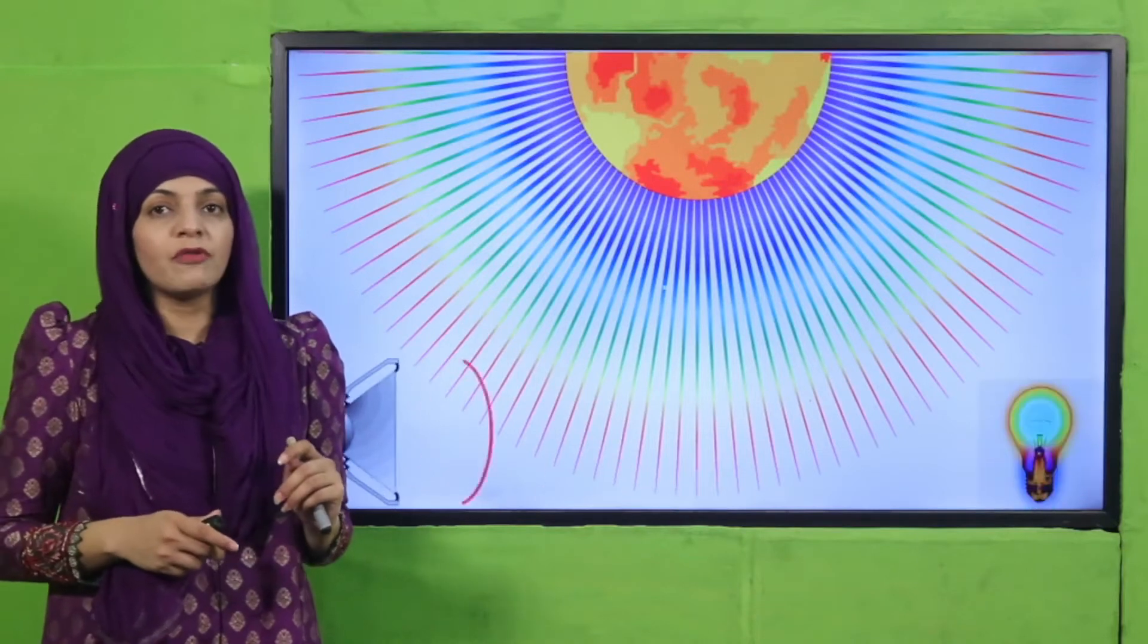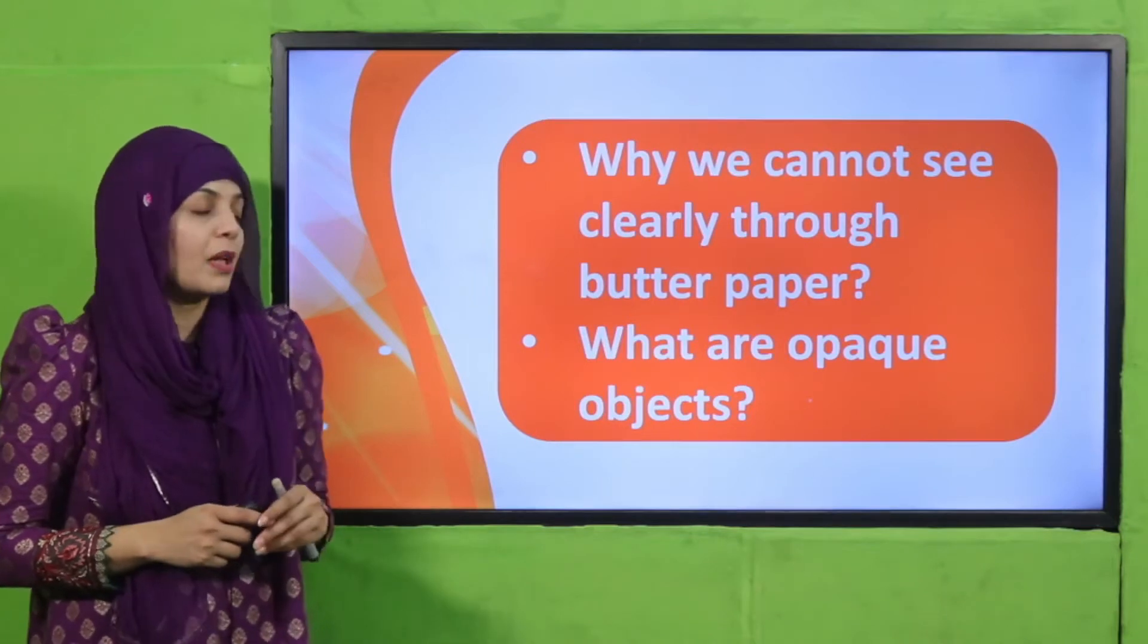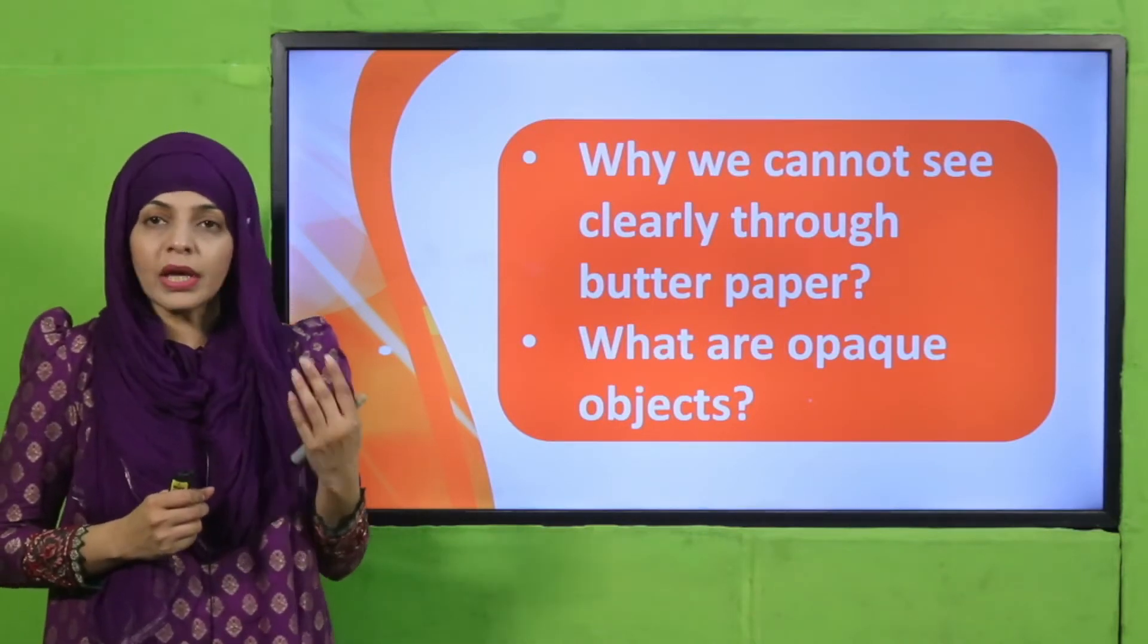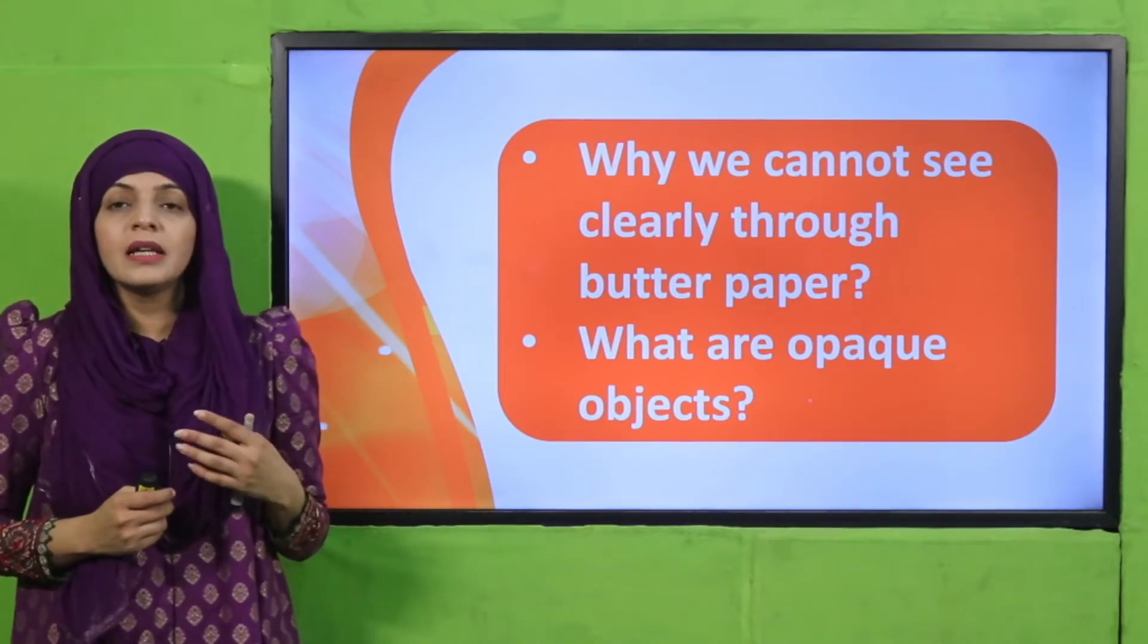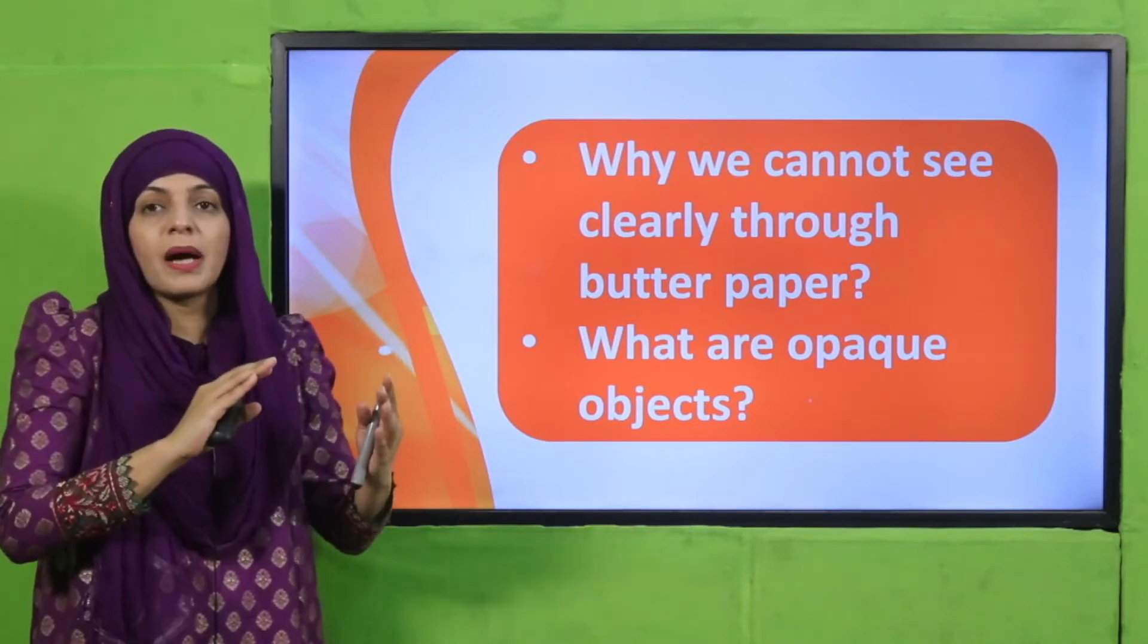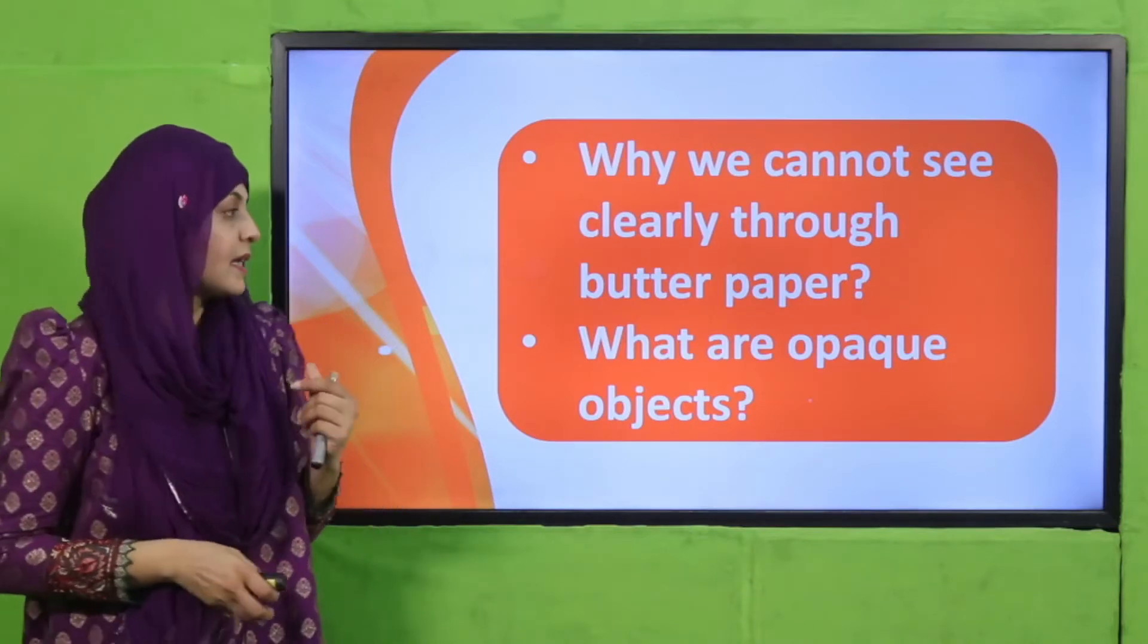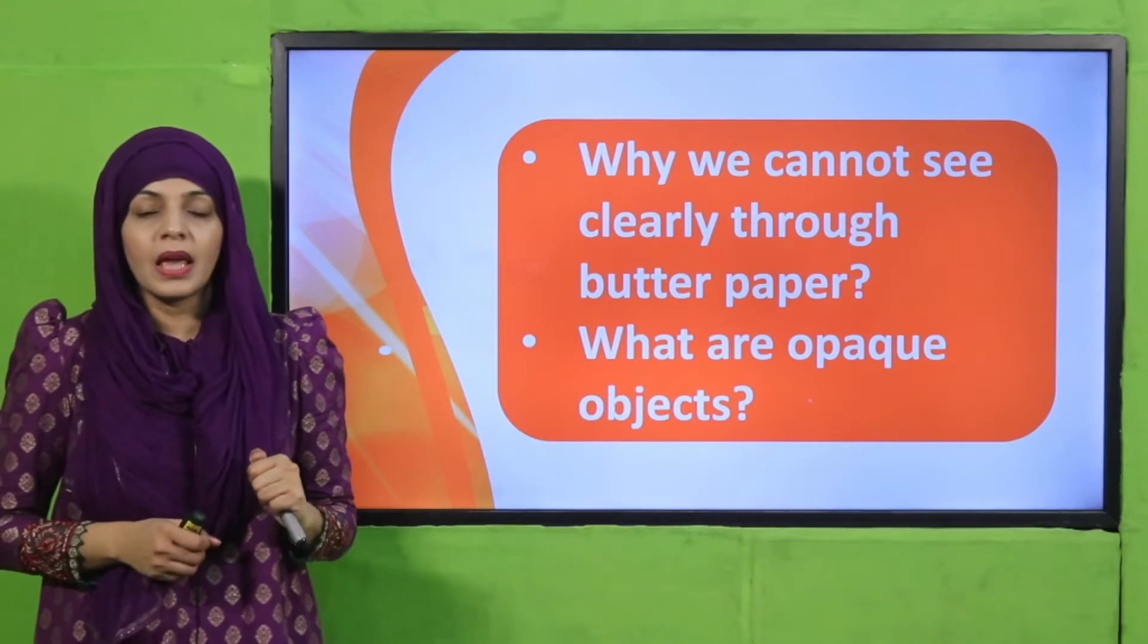Listen to the questions very carefully and then answer them. Why we cannot see clearly through butter paper? Because light cannot properly pass through it. When light cannot properly pass through something, you cannot see through it. What are opaque objects? Anything through which light cannot pass through are called opaque objects.